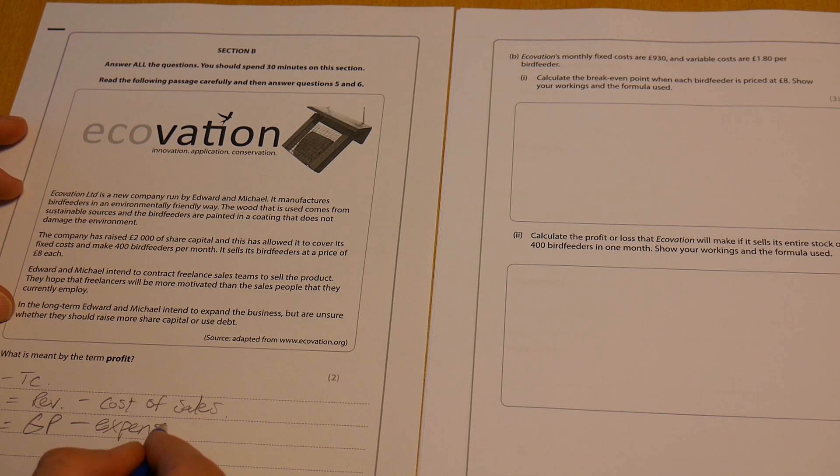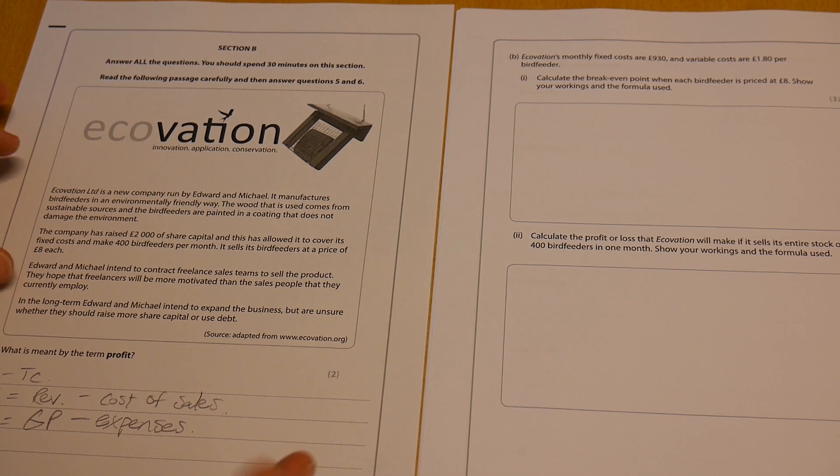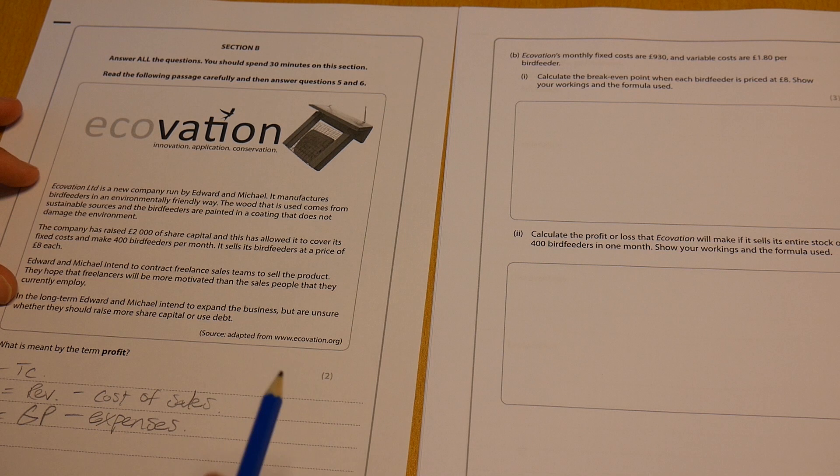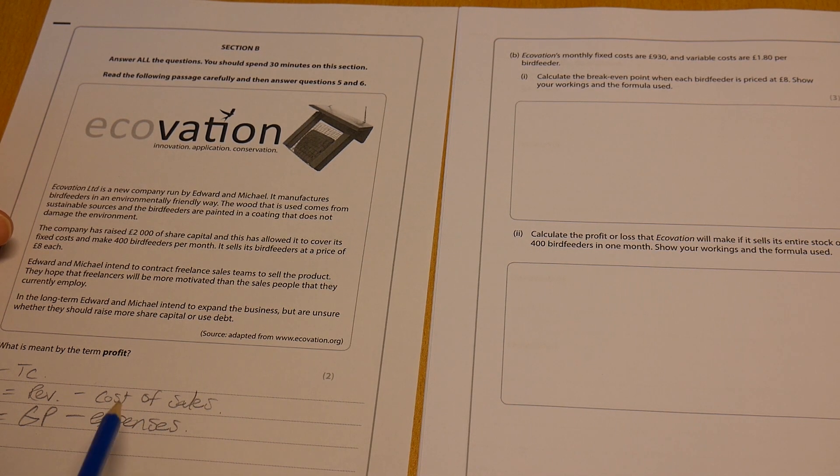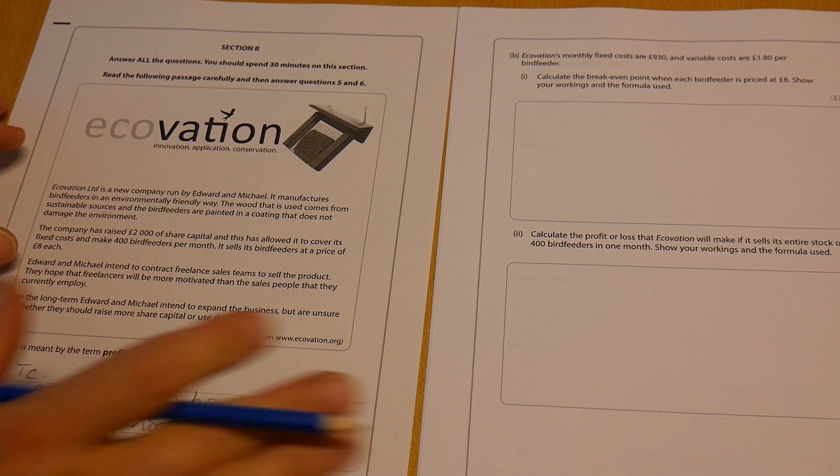Then you've got your net profit. Net profit is your gross profit minus your expenses. Now those expenses are the indirect costs involved in running a business like paying rent, mortgage repayments, could be electricity, heating, salaries, whereas the cost of sales is really dealing with the direct costs. Okay, so let's move it on now.